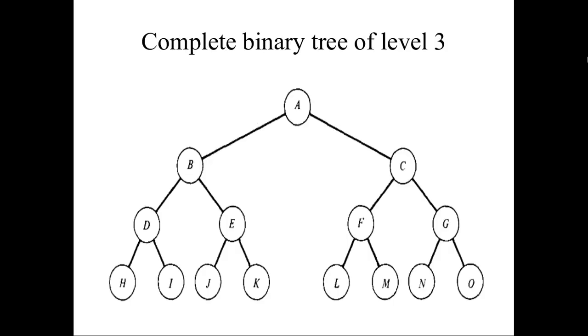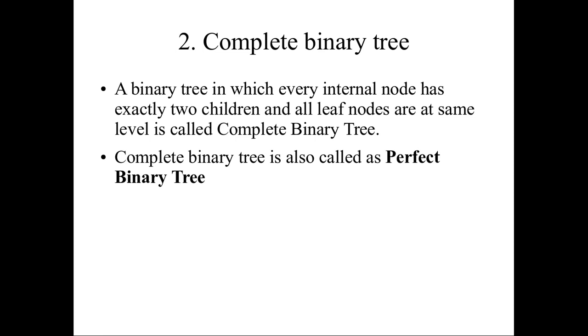In the last video we saw what is a binary tree and one type called strictly binary tree. Now we are going to see the complete binary tree. A complete binary tree is one in which every internal node should have exactly two children and all the leaf nodes are at the same level. It is also called a perfect binary tree.